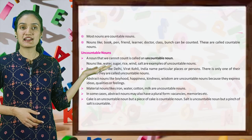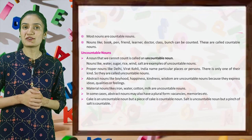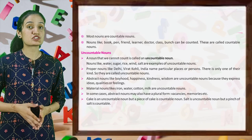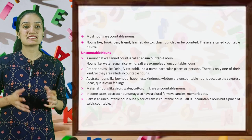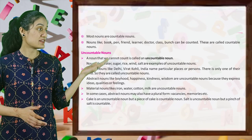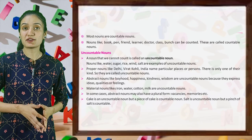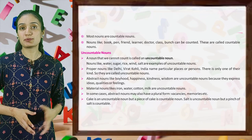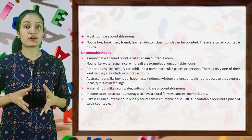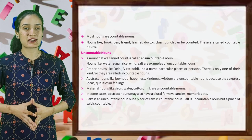Next is uncountable nouns. A noun that we cannot count is called an uncountable noun. Nouns like water, sugar, rice, wind, salt are examples of uncountable nouns. So kids, proper nouns like Delhi, Virat Kohli, India name particular places or persons — there is only one of their kind, so they are called uncountable nouns.